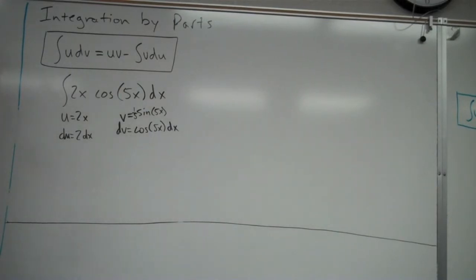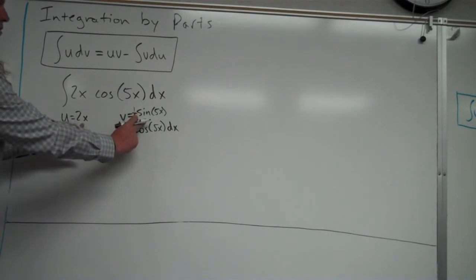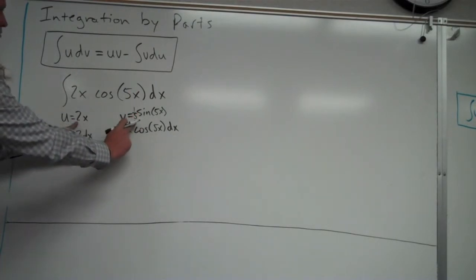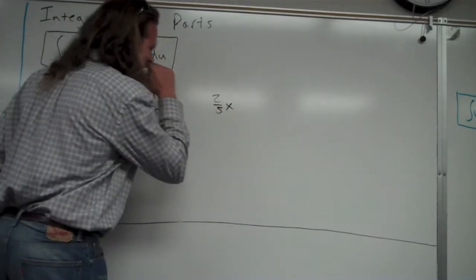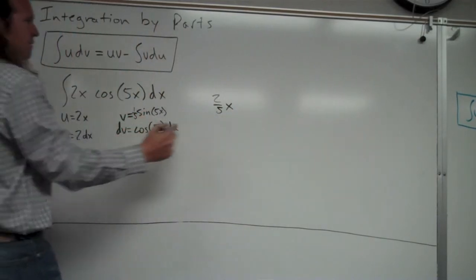And you can do it that way and you'd still get 1 fifth sine 5x for your anti-derivative. I call it reverse chain rule, which is not a technical term, but it seems to work out. So then I'm going to go ahead and replace in my formula, u times v. So I have u here, v here. I'm going to multiply them. 2x times 1 fifth sine 5x. 2 and the 1 fifth. I'll multiply those together and get 2 fifths times x. And then I have sine of 5x.